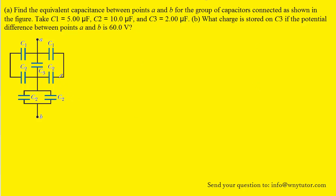In order to solve most capacitor questions, what we need to do is combine the capacitors step by step until we have a circuit with just a single equivalent capacitor. So let's take the first step in combining the capacitors by looking at the two capacitors marked C1 and C2. We can see that those two capacitors on the left side are in series with one another, as are the two capacitors on the right side. And we know that when capacitors are in series, they obey the following equation.